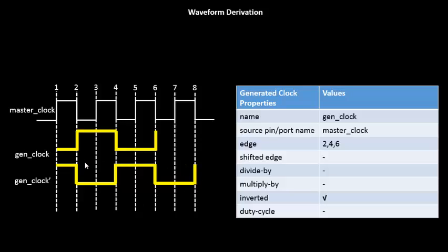There is one more way to represent this kind of waveform. For example, we have been given this waveform and now we have to derive the generated clock properties out of it. We already know about the edge option. Looking at the edge option: it specifies the first rising edge, the first falling edge, and the second rising edge. Starting from the first clock edge, the first rising edge of the generated clock comes at the fourth clock edge, the first falling edge comes at the sixth edge, and the second rising edge comes at the eighth edge. So the options will be 4, 6, and 8.